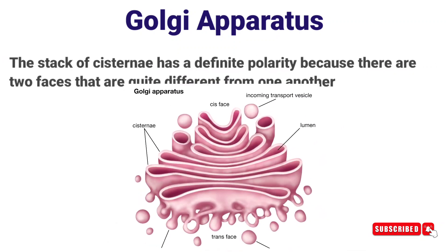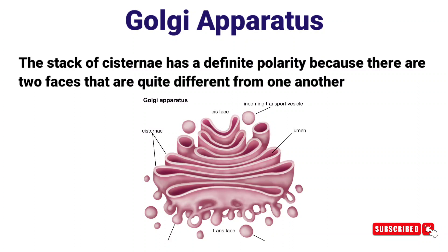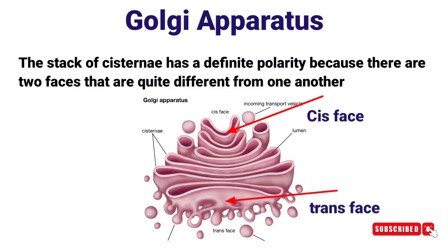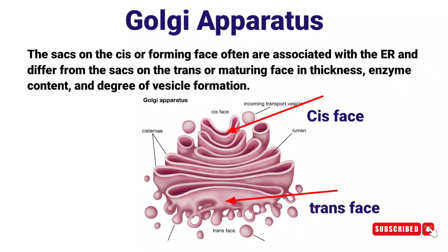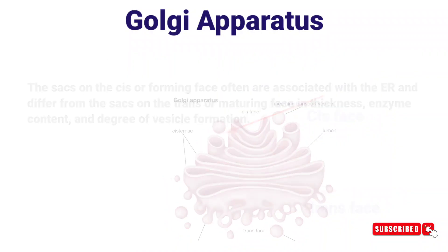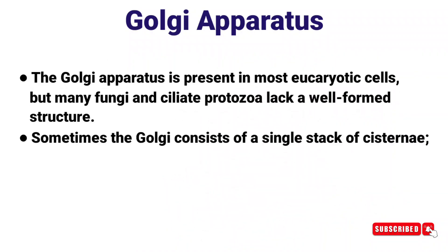The stack of cisternae has a definite polarity because there are two faces. The sacks on the cis, or forming face, are often associated with the endoplasmic reticulum and differ from the sacks on the trans, or maturing face, in thickness, enzyme content, and the degree of vesicle formation.